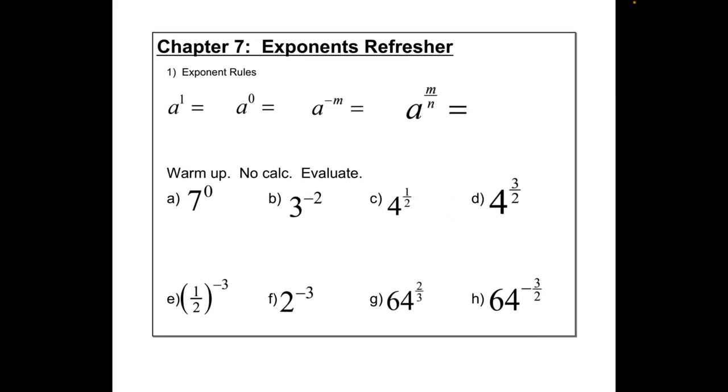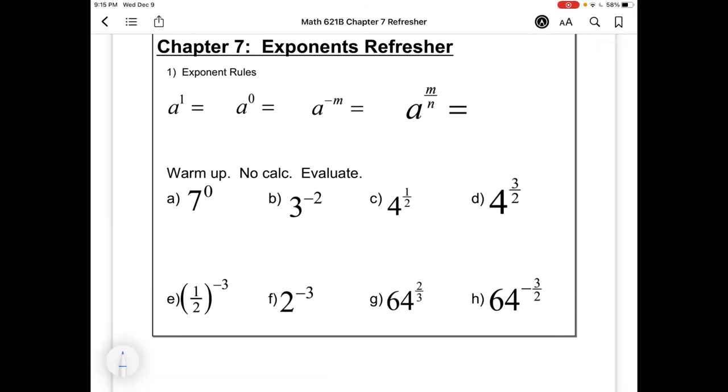All right, back to the matter at hand. Chapter 7, exponents refresher. So we might want to remember some of our exponent rules. a to the 1 is just a. Anything to the power of 0 is just 1, and this is all assuming that a is a positive number. a to the negative m: negative exponents mean that we flip. a to the m over n: fractional exponents mean that we take roots. So this would be the nth root of a all to the power of m.